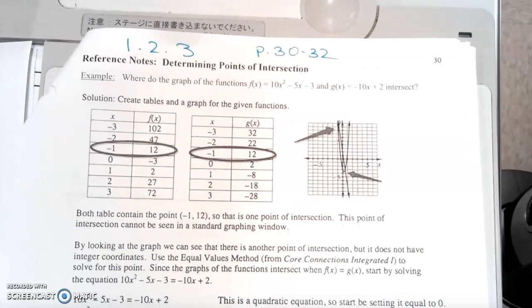These are reference notes for determining the points of intersection. This example is fairly similar to the one we did with Winona jumping off the bridge, opening his parachute. We have a graph of 10x squared minus 5x minus 3 and a second graph of negative 10x plus 2, and we want to see where they intersect.